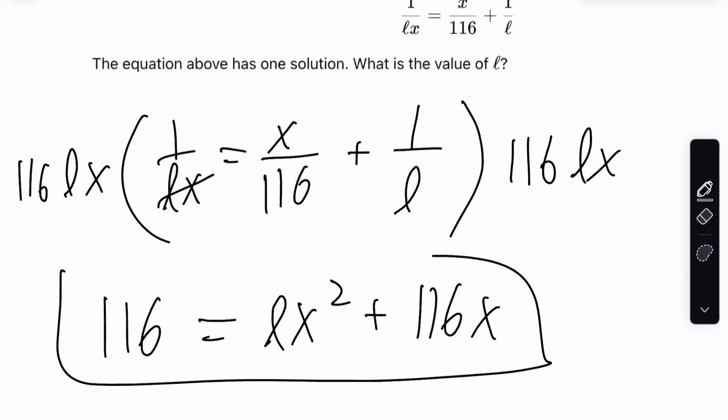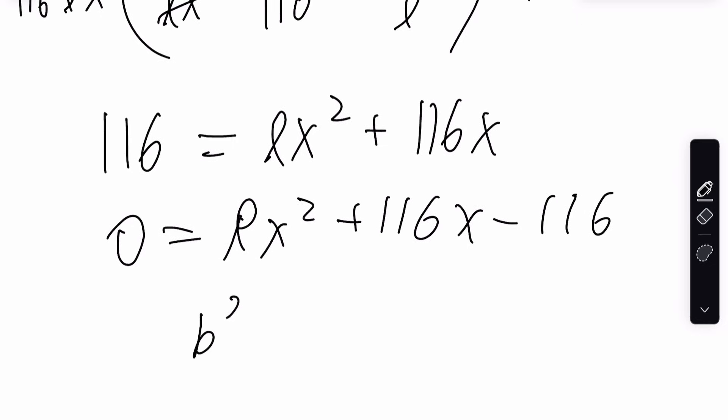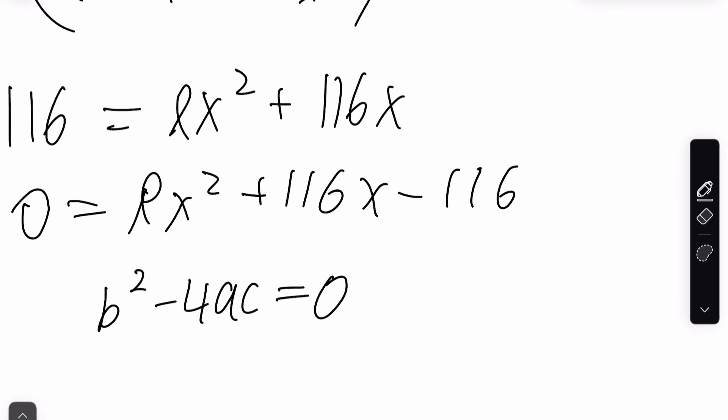If this equation has one solution, what is the value of L? Well, this is just a quadratic, and if you take the 116 over to this side, what you'll notice is that you can use B squared minus 4AC, which is the discriminant, and set equal to zero, and plug in all of your values.